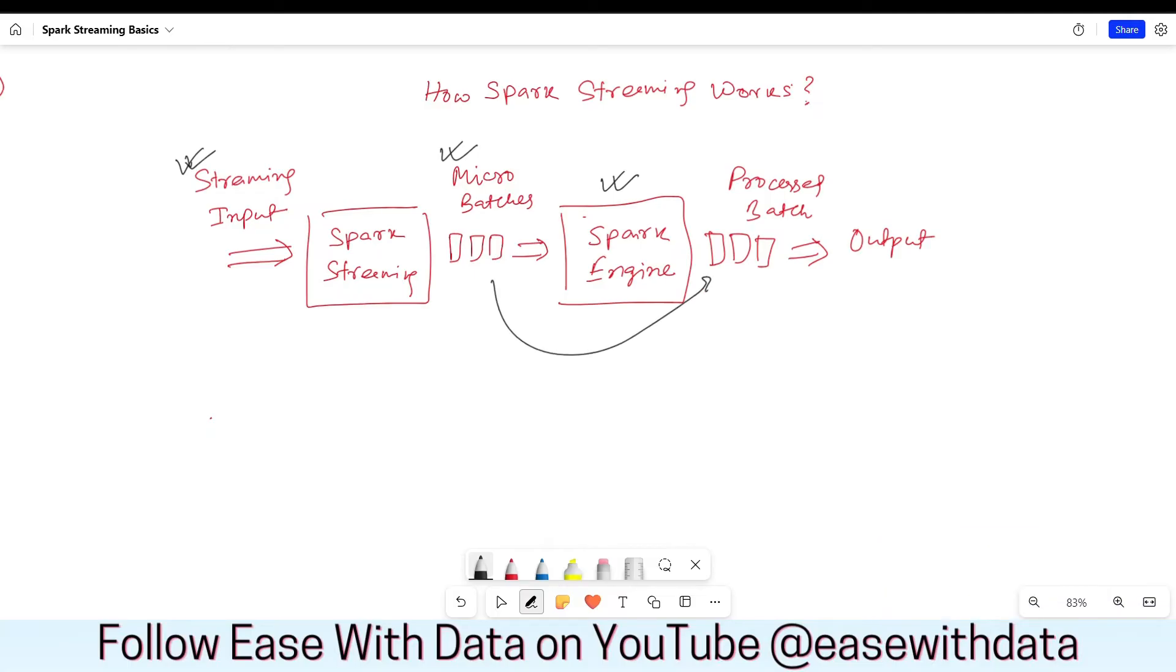And once that batch is processed, similarly, the processed batch output would be written or would be sent to the output location where we are sending, displaying, or writing our output streaming data. Now, if you understand it correctly, the streaming data is continuously broken down into micro-batches for processing. And each batch is being processed individually by the Spark engine. And this Spark engine runs the same data frame code that you have written. Once you are able to write a data frame code for batch processing, it's very easy to convert the same code for streaming.